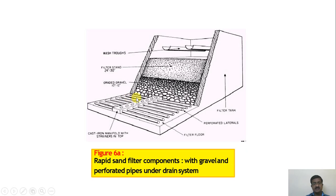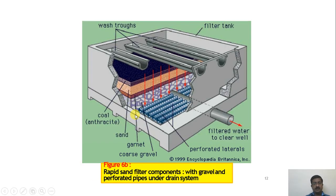This figure shows the rapid sand filter components with the gravel and perforated pipe under drain system. During backwashing, reverse water is sent through the layers, which removes dirty water via wash troughs. During filtration, the perforated pipes carry filtered water to the clear water zone. The wash water troughs and under drain system components are visible in the pictorial view.